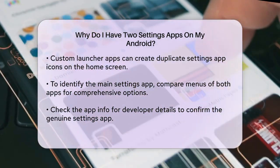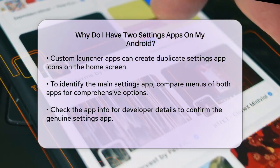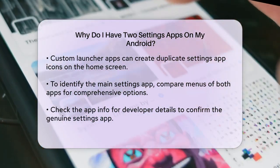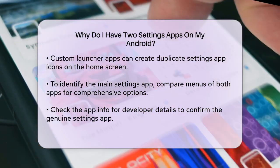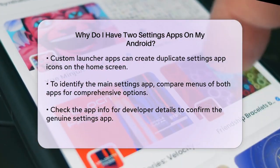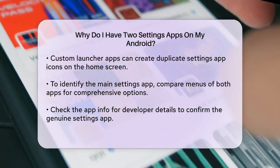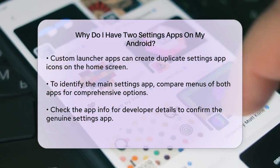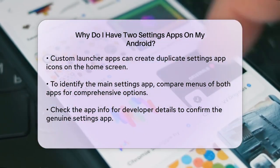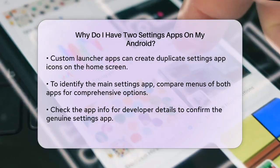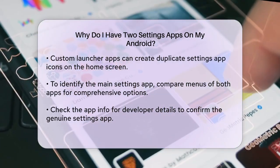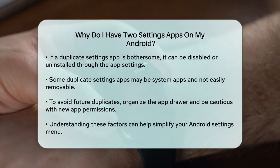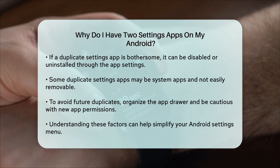If you find the duplicate settings app bothersome, you can disable or remove it. To disable the second settings app, go to the Settings app, navigate to the Apps or Applications section, find the second settings app, and select Disable or Turn Off.